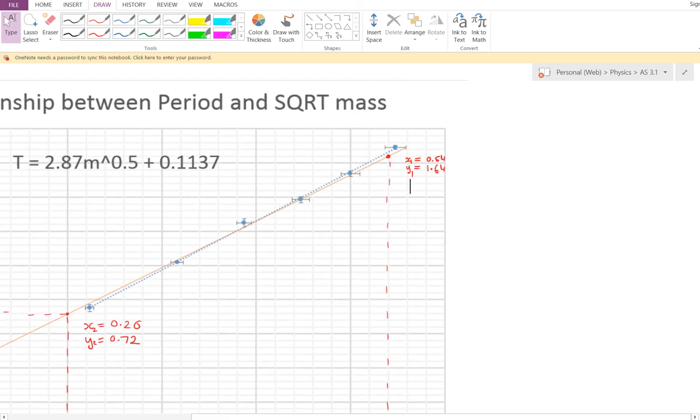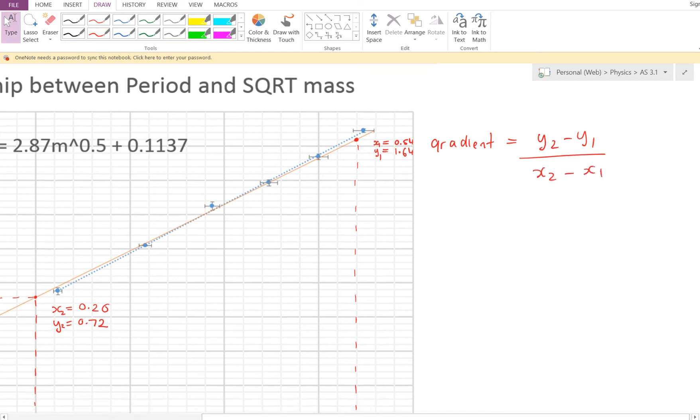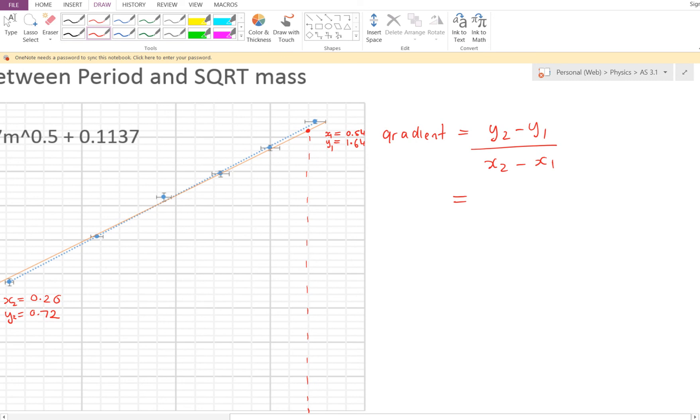Now, as you know, when we're working out gradients, the gradient of a line is going to be y2 minus y1, so the change in y over the change in x. So if I substitute numbers in from my working out before, my y2 is, actually I've just realized I've got that round the wrong way, so we're going to make this our y2 instead of our y1. So we're going to have here 1.64 minus the 0.72. I'm going to divide that by our x2, which is actually going to be 0.54 minus the other one, which is the 0.20.